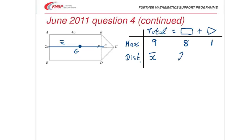The centre of mass of the rectangle is at a distance of 2A. And the centre of mass of the triangle. Now, you might want to pause the video and think about this for a minute. It's 4A plus A over 3. 13A over 3. Because the centre of mass of a triangle is 1 third of the way up the median.